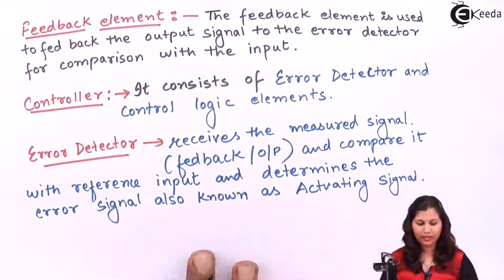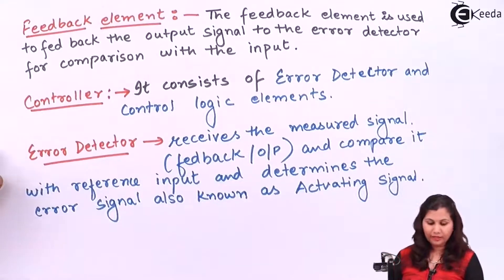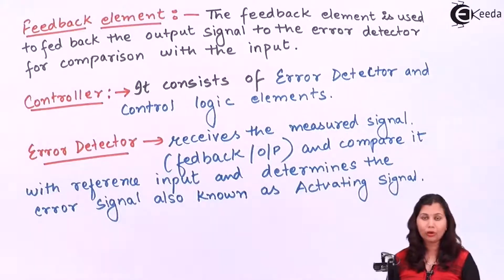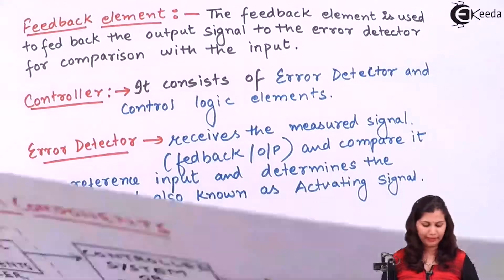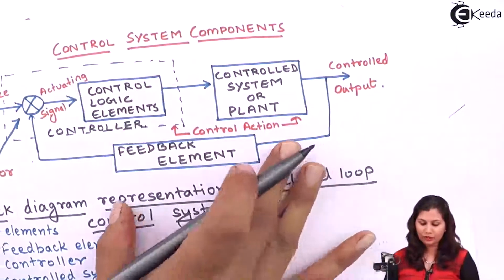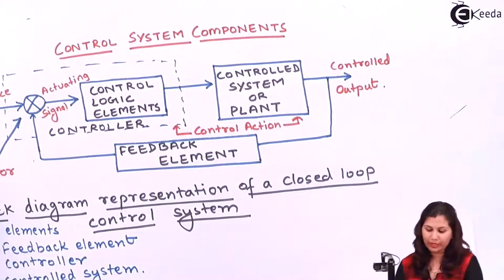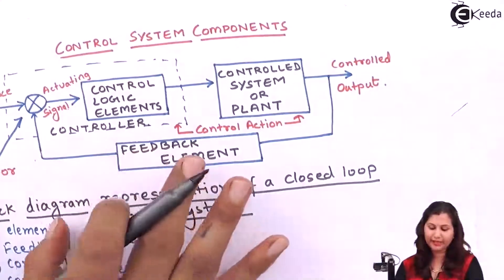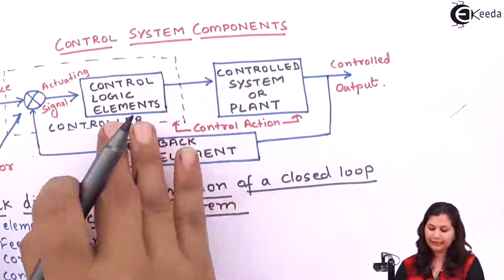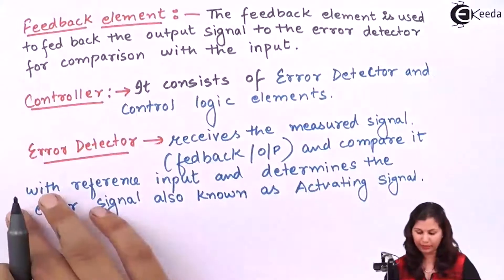This actuating signal is actually a very low power signal — it is at a very low power level and it is not sufficient to be applied to the plant directly. So we have control logic elements in between them, so that they manipulate this actuating signal and make it suitable to be applied to the system or the plant.